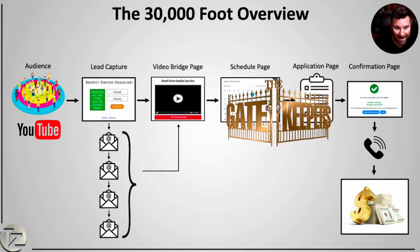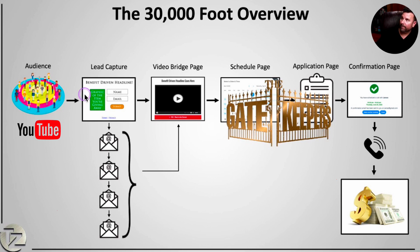At the end of the day, here is the entire funnel from start to finish: the YouTube ad is about 60 to 90 seconds and it pushes away the wrong people and attracts the right people. It sends them to a capture page where they opt in, then they watch a video. The people who are not a good fit will filter themselves out at one of these steps — they'll either skip the ad, not opt in, or not watch the video. And that's all what we want, because we don't want to be hopping on the phone with time vampires.